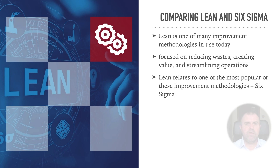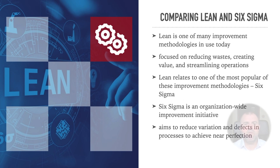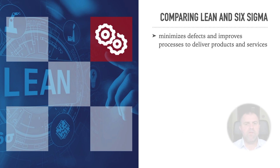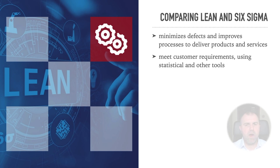Six Sigma is an organization-wide improvement initiative that aims to reduce variation and defects in processes to achieve near-perfection in goods and services. It minimizes defects and improves processes to deliver products and services that meet customer requirements using statistical and other tools.